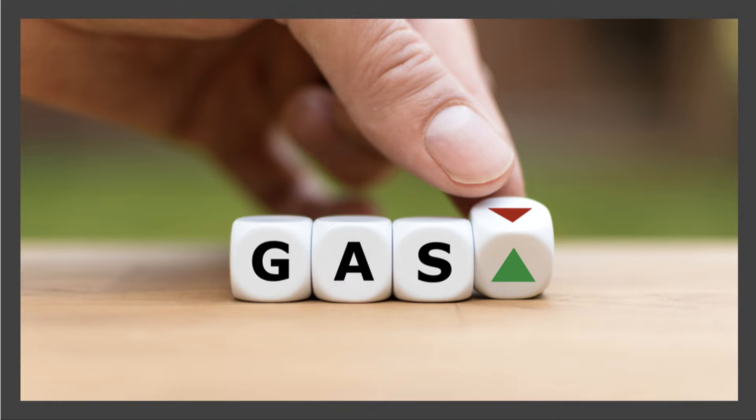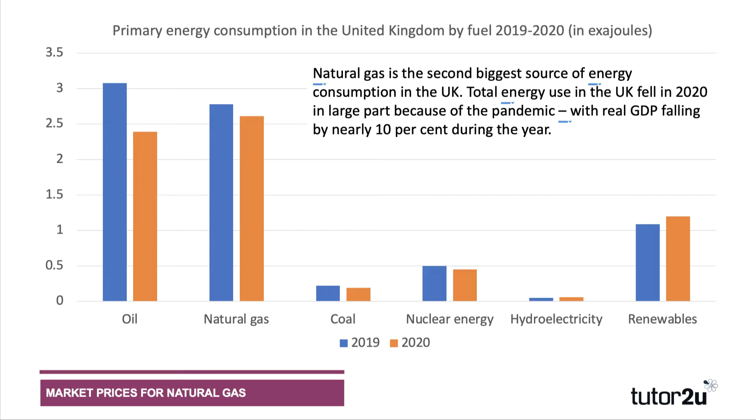Although Britain has left the European Union, we are still part of the Northwest European gas market, and the price we pay for our natural gas — the price per therm of energy — is determined mainly by wider market conditions. We're going to look at some examples of supply and demand factors which can affect the price of gas either upwards or downwards, but first a bit of background on gas consumption in the UK.